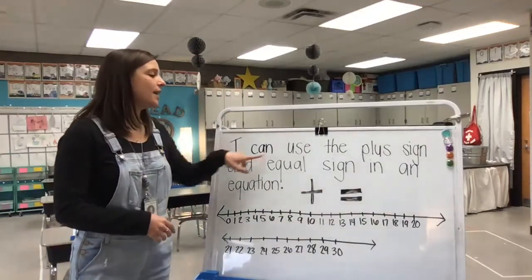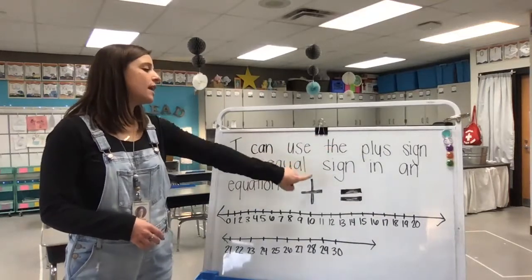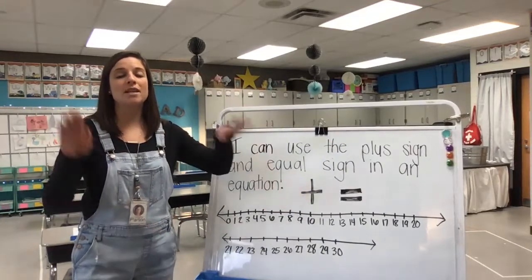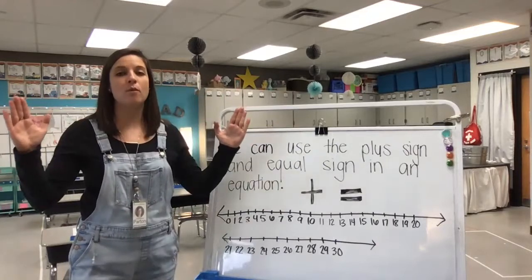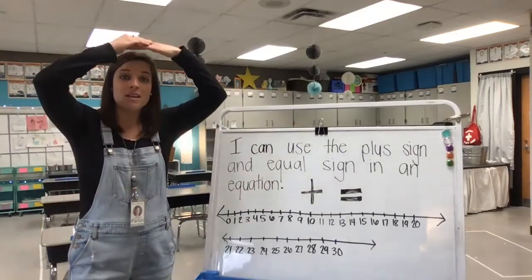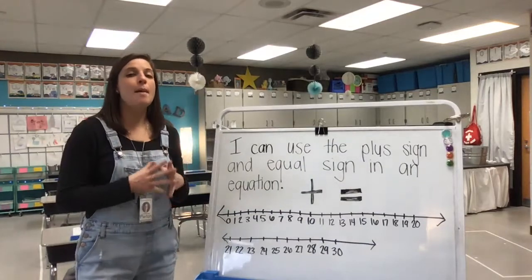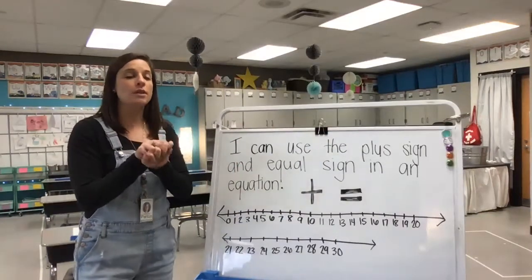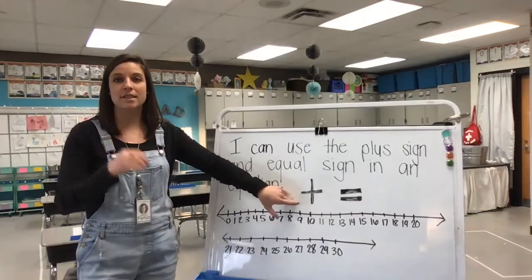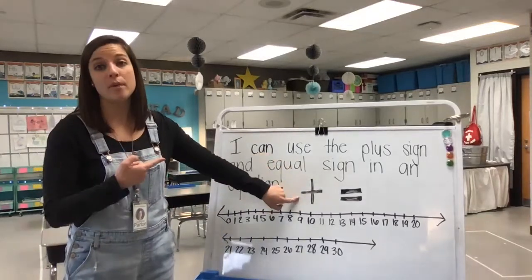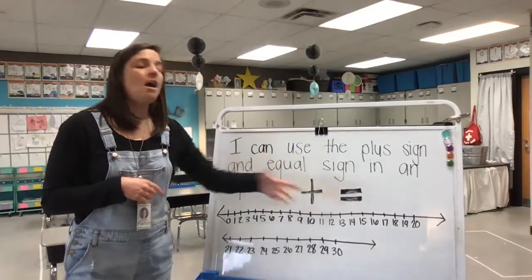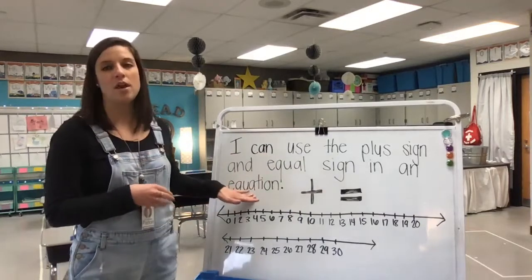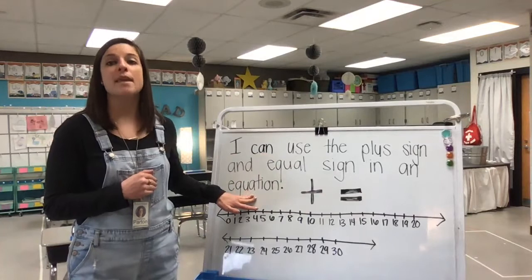Our learning target says: I can use the plus sign and equal sign in an equation. We've been practicing addition sentences — putting groups together to make them bigger than before, except when we add with zero. Today's learning target focuses not only on putting groups together, but also on writing our addition sentences using the correct symbols: the plus sign and the equal sign. Another word for an addition sentence is an equation. Can you guys say equation with me? Equation. Good job.